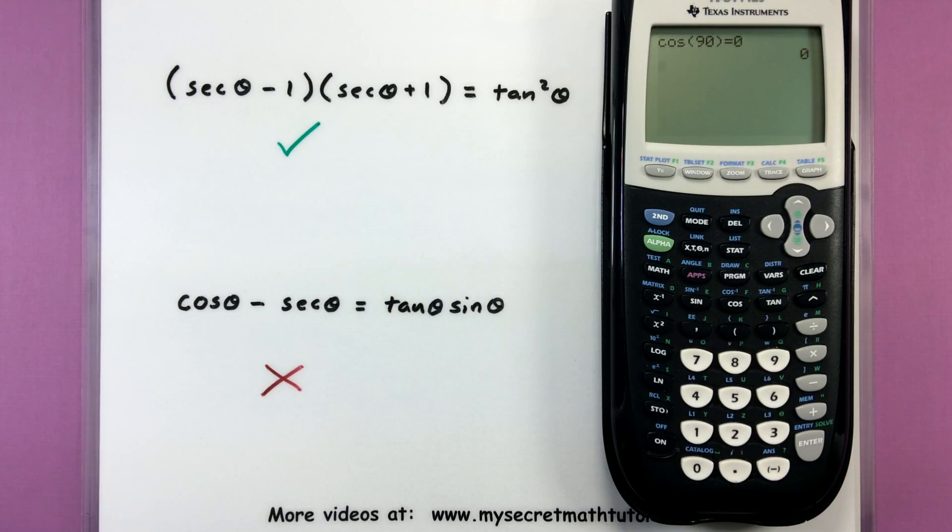But when I try and have the calculator check it, it gives me a zero and it says this is false. And the reason why it's doing this is because currently it's in radian mode. So the way the calculator is interpreting this is cosine of 90 radians. Is that equal to zero? And of course, the answer would be false. That is not true.